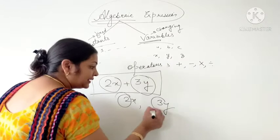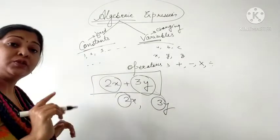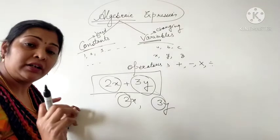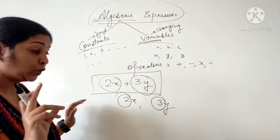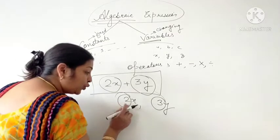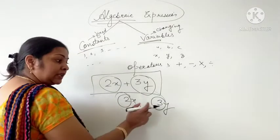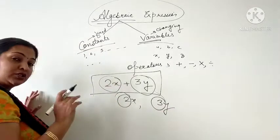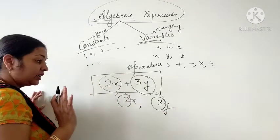And these 2 and 3, they are known as Numerical Coefficients of the Algebraic Term. Here 2 is the Numerical Coefficient of X and 3 is the Numerical Coefficient of Y. So I think Coefficient is also clear to you.